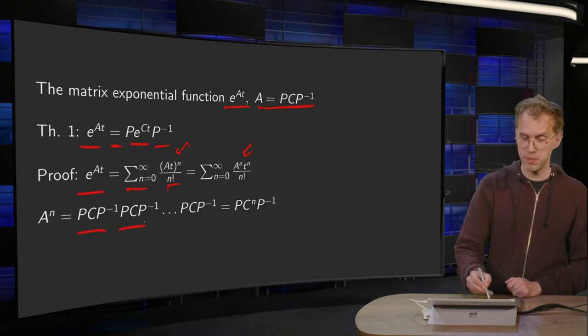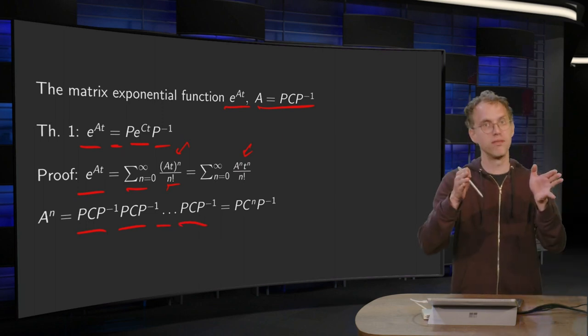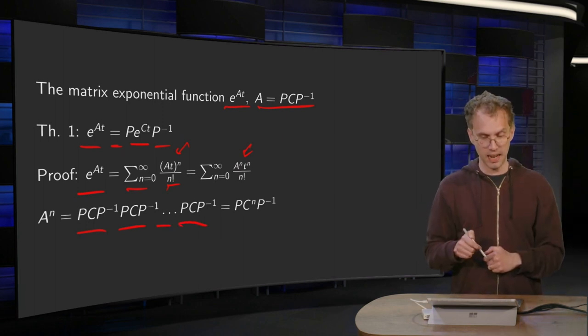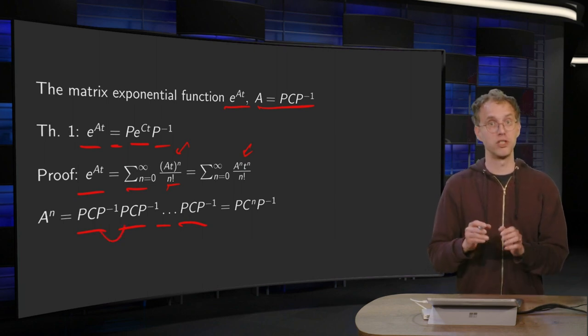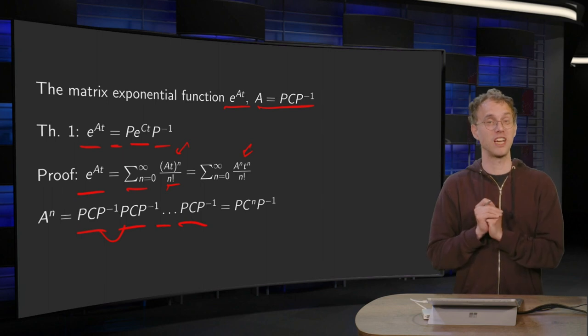PCP inverse times PCP inverse times PCP inverse times PCP inverse, and this n times. Now what happens is that all those P and P inverses drop out, the P's and P inverse cancel out in the middle.